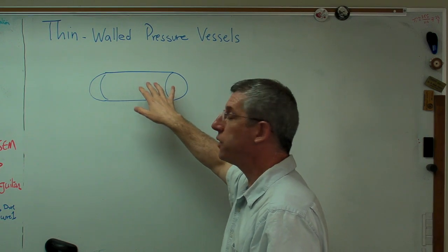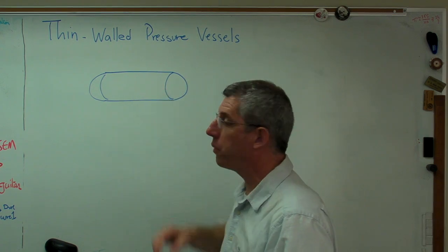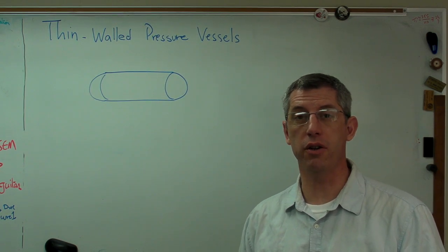We assume that these have constant cross sections and hemispherical ends. But there are other thin-walled pressure vessels we see around us a lot. Think of a can that holds a carbonated drink, like a Coke can.